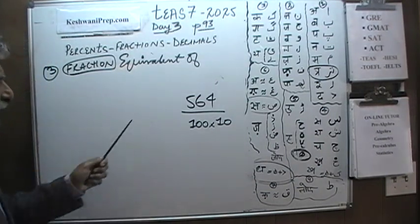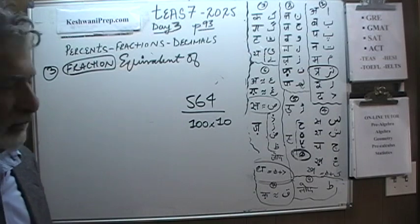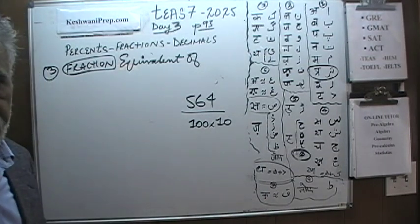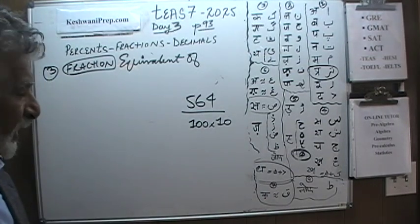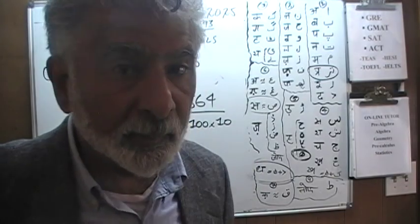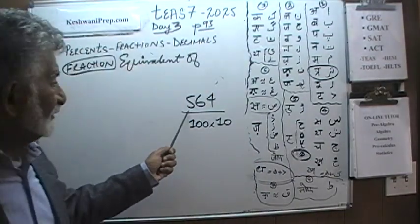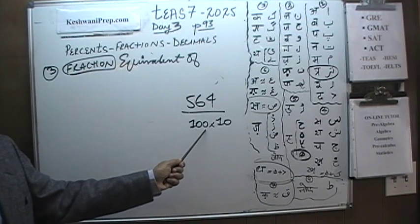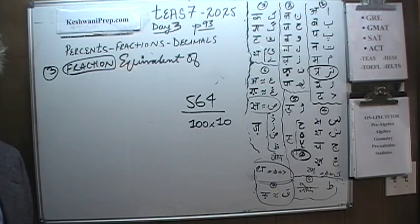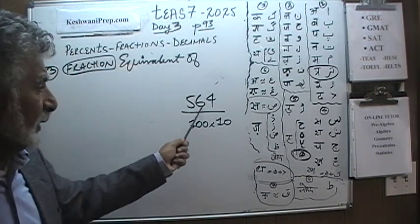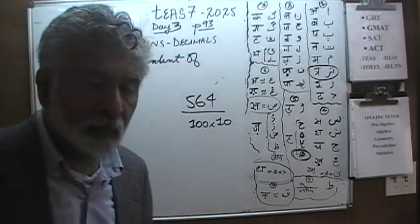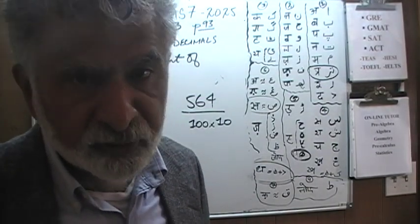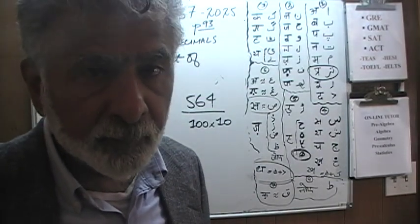We can divide the top and bottom by 4. You can see that 564 is an even number and 100 is an even number, so you could divide top and bottom by 2 twice, but I am just going to do it in one step — divide top and bottom by 4.